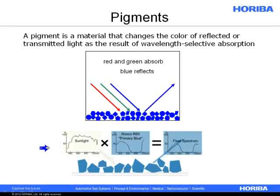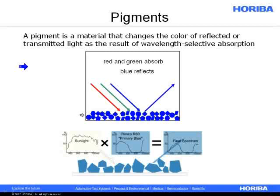Looking further at a blue pigment: sunlight is a broad band across many wavelengths, and as it interacts with a blue pigment at the surface, there is both absorption and reflection at certain wavelengths. Since we have absorption here and reflection here, this creates a blue appearance to the observer. This is what pigments do. And many times, pigments are particles, and the size of the particle has a big impact on the color, brightness, hues, opacity, tint, etc. of the surface being coated.